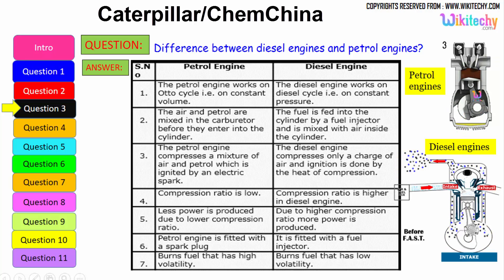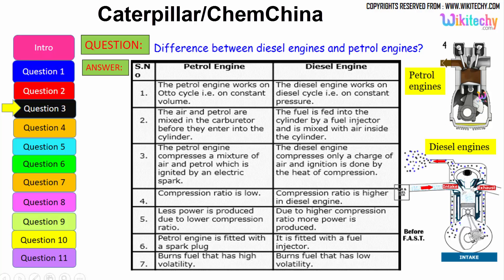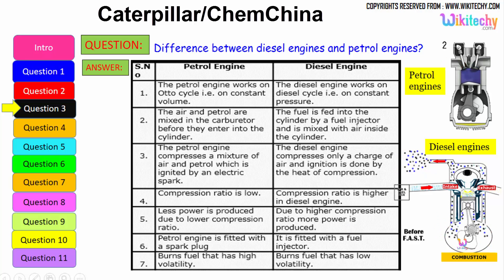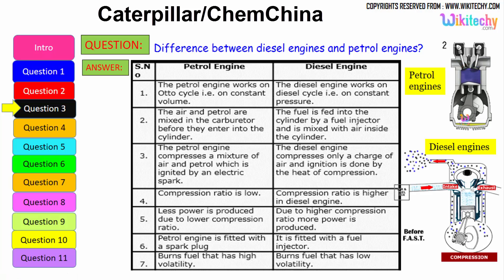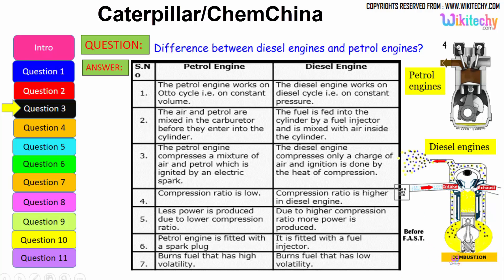The compression ratio is low in a petrol engine whereas the compression ratio is higher in a diesel engine. Less power is produced due to the lower compression ratio; higher compression ratio means more power is produced. The petrol engine is fitted with a spark plug, while the diesel engine is fitted with a fuel injector. Petrol burns fuel with high volatility, whereas diesel burns low volatility liquid.